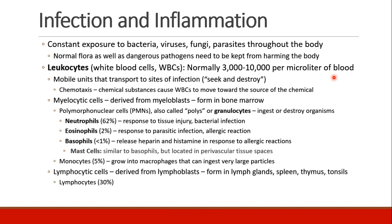Now that we've talked about red blood cells, we're going to shift gears and talk about infection and inflammation. The body is constantly exposed to all sorts of pathogens — bacteria, viruses, fungi, parasites — throughout the entire body. We have normal flora that live healthily in our systems, as well as dangerous pathogens that need to be kept from harming the body. White blood cells, or leukocytes, have a normal concentration of 3,000 to 10,000 per microliter of blood. Many use chemotaxis, where chemical substances cause white blood cells to move toward the source of the chemical.